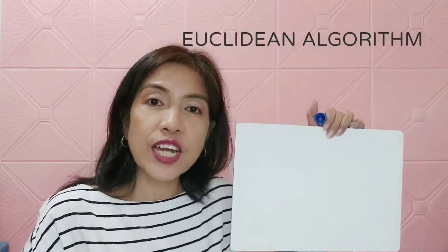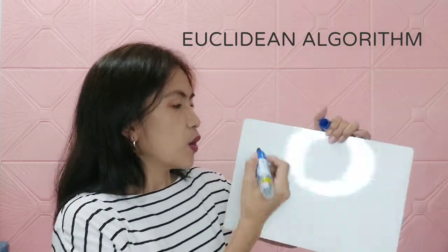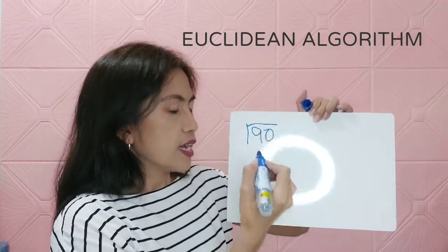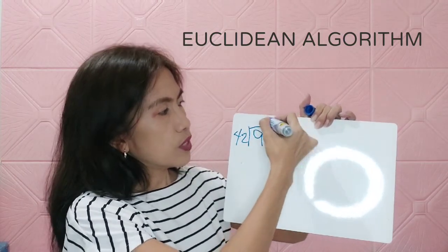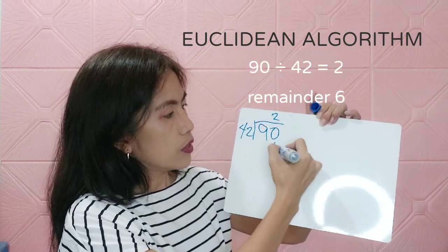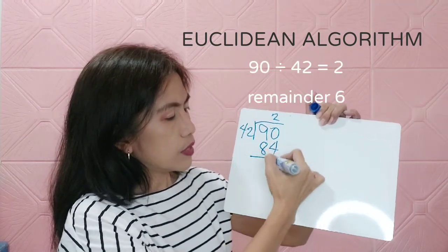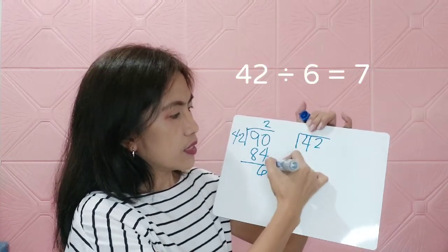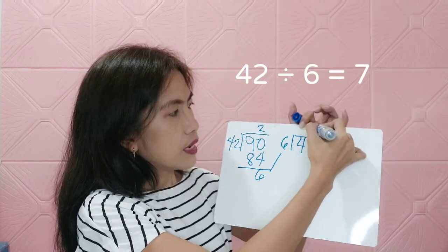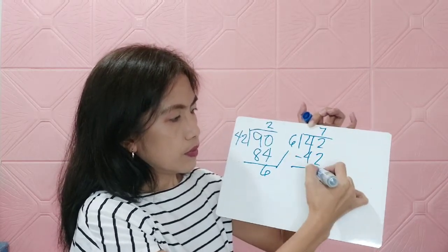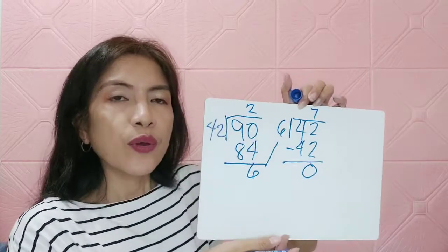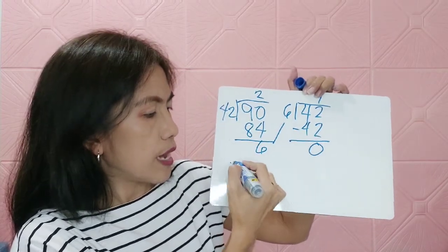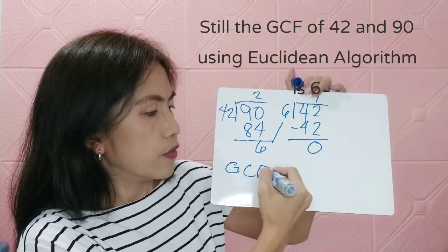Using the Euclidean algorithm for 42 and 90: divide 90 by 42, which gives 2 remainder 6. Then divide 42 by 6, which gives 7 remainder 0. The divisor that gives us 0 is 6, so the GCF of 42 and 90 using the Euclidean algorithm is 6.